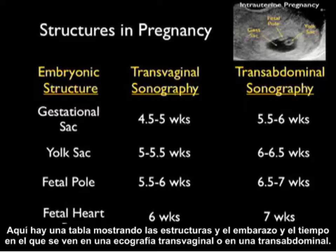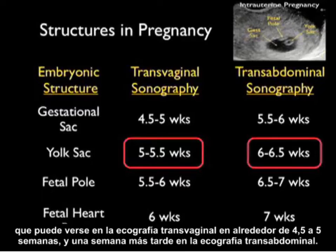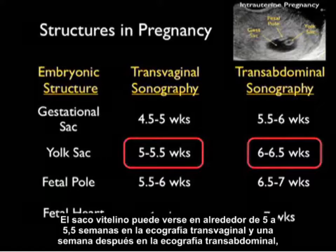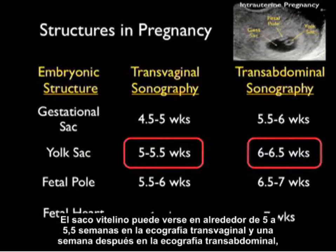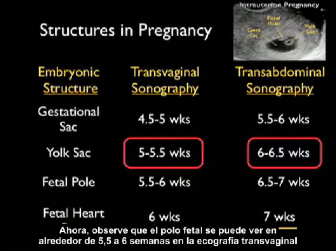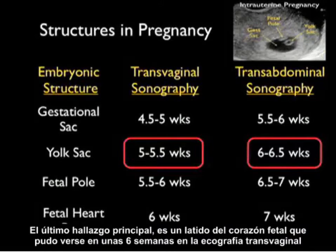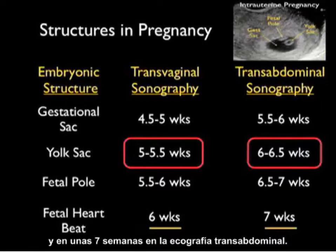Here's a table showing the structures in pregnancy and approximately when they're seen on transvaginal versus transabdominal sonography. The gestational sac is seen on transvaginal sonography at about 4.5 to 5 weeks and about a week later on transabdominal sonography. The yolk sac is seen at about 5 to 5.5 weeks on transvaginal sonography — circled in red as this is really how we diagnose an intrauterine pregnancy. The fetal pole is seen at about 5.5 to 6 weeks on transvaginal sonography, and fetal heartbeat is seen at about 6 weeks transvaginally and 7 weeks transabdominally.